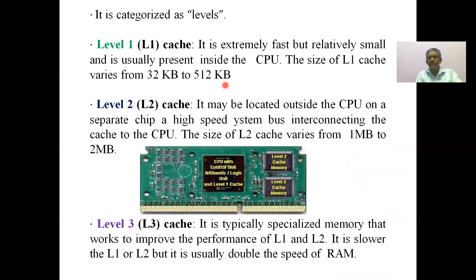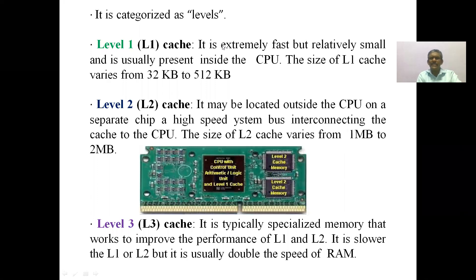Cache memories are broadly categorized into levels. There are three levels of cache memory: Level 1 cache memory, Level 2 cache memory, and Level 3 cache memory.